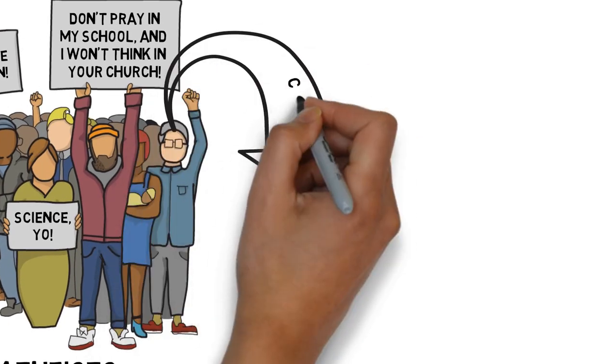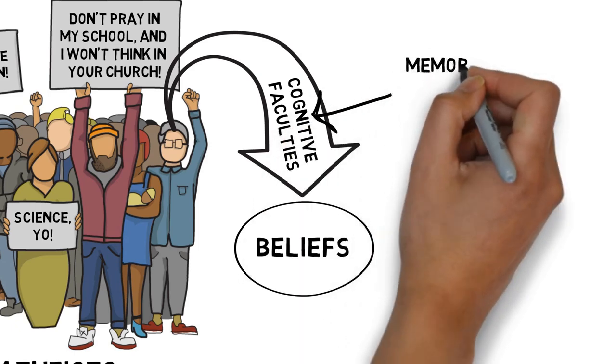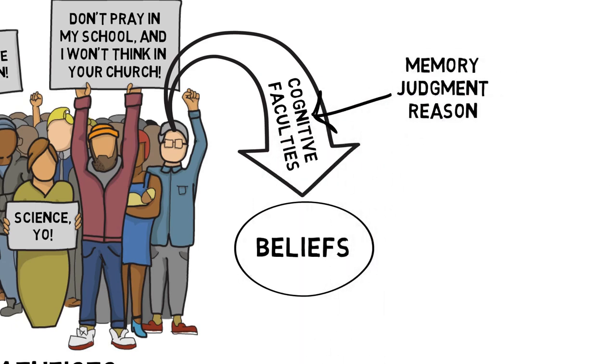Human beings tend to trust our cognitive faculties, which is simply a fancy term for the processes and abilities we use to form our beliefs. These processes and abilities include things like memory, moral judgment, reason, and so on.